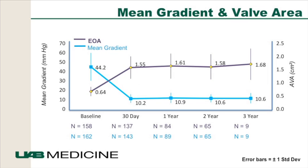The valves did well. The mean gradient coming into the procedure was about 44 mmHg; post-valve placement, gradients were about 10 mmHg and stayed at 10 at one to three years. The valve area stayed at about 1.5 to 1.6 cm² and was steady. So the valves did perform well over the first three years.